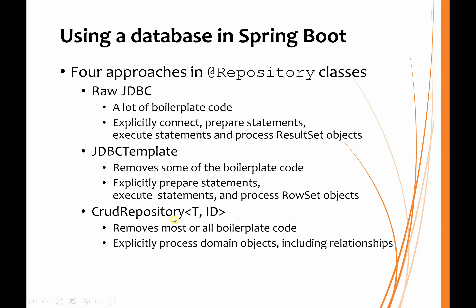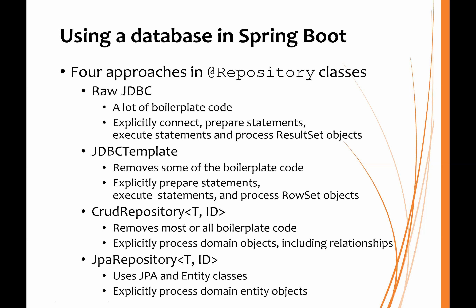We then looked at using a CRUD repository, where we provide the type of data to be used and the type of the ID in that data. The great thing about this is it removed most or all of the boilerplate code, leaving us only the responsibility of processing the domain objects. But it still left us with the responsibility of forming the relationships between the objects from the CRUD repository. Most recently, we looked at the JPA repository, where the value type is now an entity class, again with an ID type. Because this uses JPA along with our entity classes, we have removed all the boilerplate code — there is no longer any need to establish relationships between objects because the JPA does that for us.